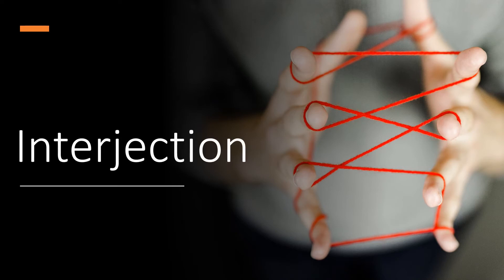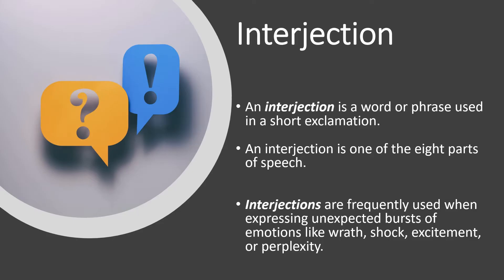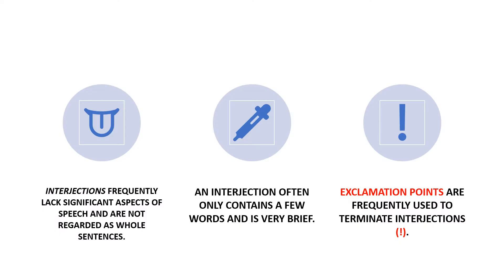Today we will discuss interjections. An interjection is a word or phrase used in a short exclamation. It is one of the eight parts of speech. Interjections are frequently used when expressing unexpected bursts of emotion like wrath, shock, excitement, or perplexity. Interjections frequently lack significant aspects of speech and are not regarded as whole sentences.